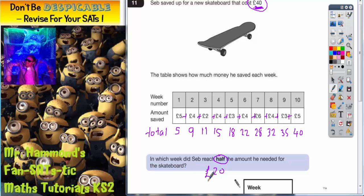So all we've got to do now is see which week did he reach the magic £20 figure. Well in week 5 he had £18, but this is not enough. But the following week it took him over £20 to £22. So in week 6 was when he actually had slightly more than half of what he needed. We can't put week 5 because he didn't have enough. So the answer to that question is week 6.